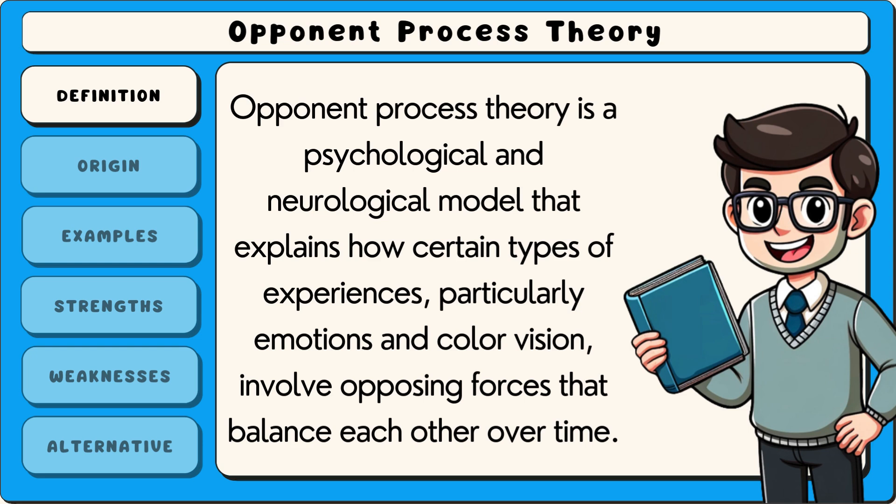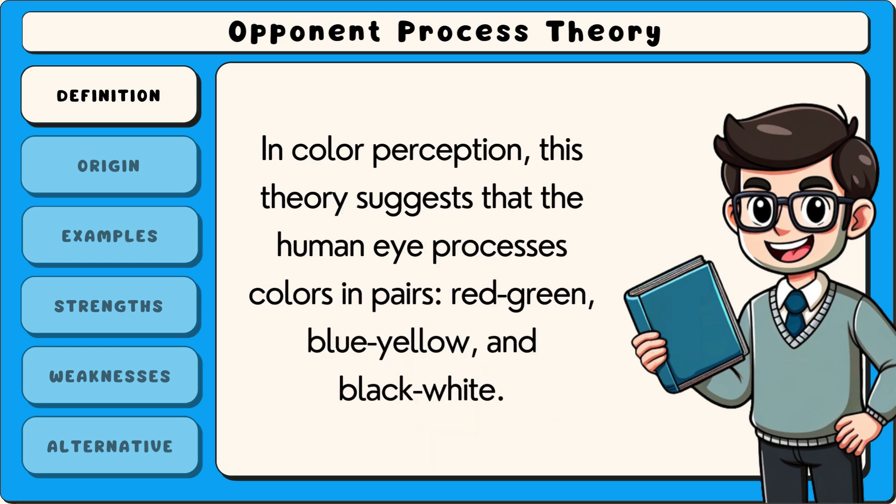Opponent process theory is a psychological and neurological model that explains how certain types of experiences, particularly emotions and colour vision, involve opposing forces that balance each other over time. In colour perception, this theory suggests that the human eye processes colours in pairs: red-green, blue-yellow and black-white.